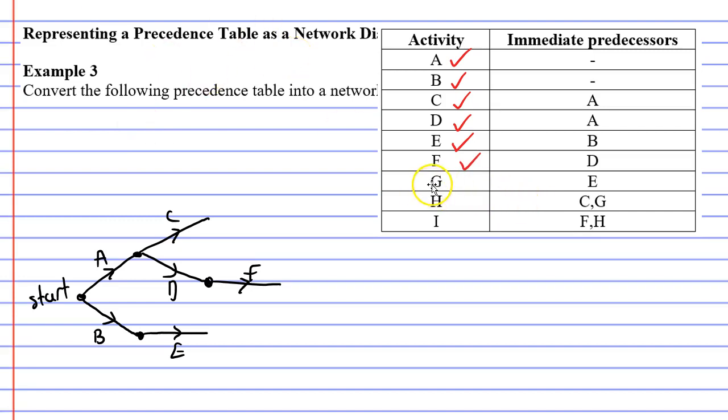Next, activity G comes after activity E. So we'll complete activity E with the vertex and then activity G comes out from there. Now looking at activity H, we can see that we've got two immediate predecessors, activities C and G. That means that these two edges need to connect up at the same vertex.